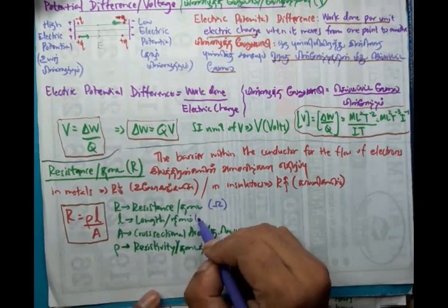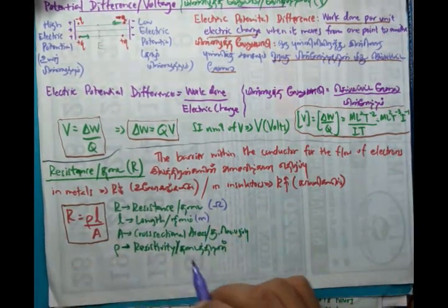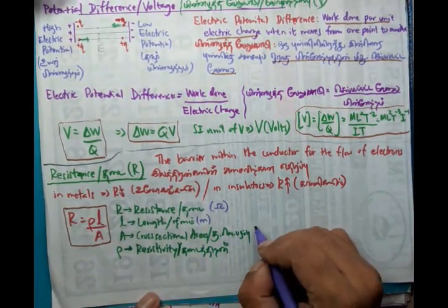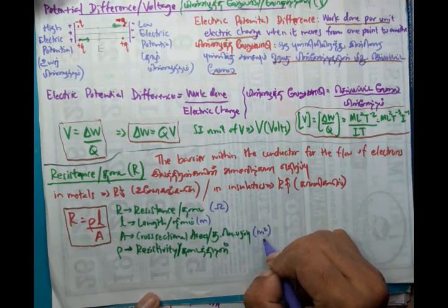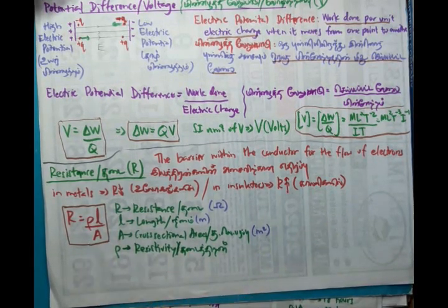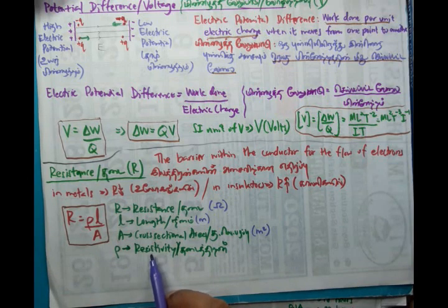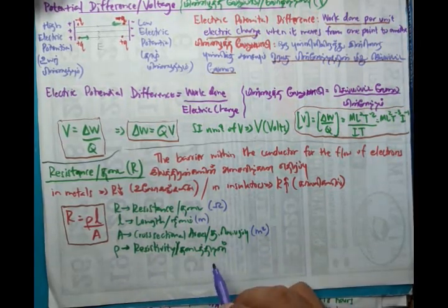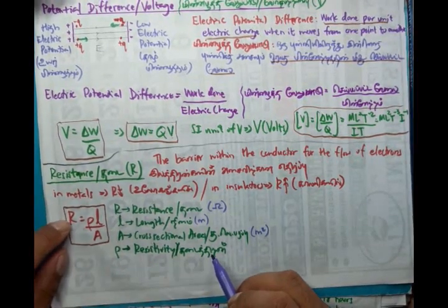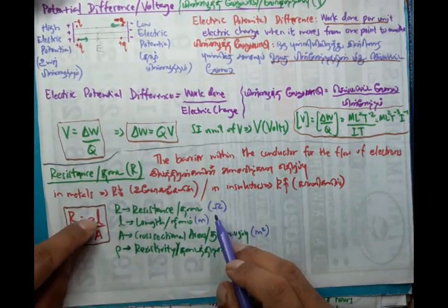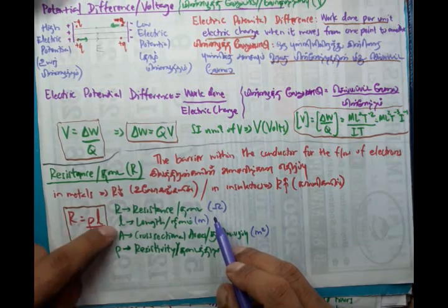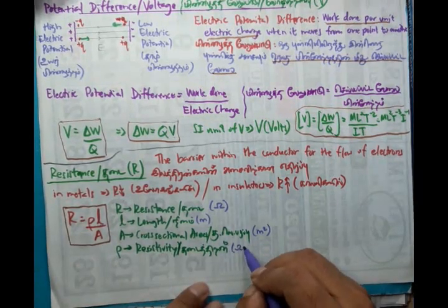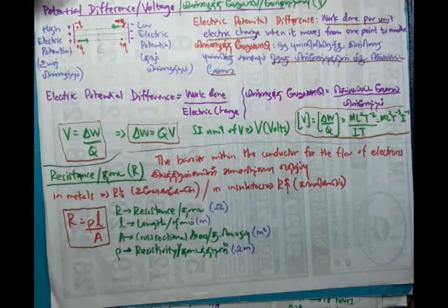This is the equation R equal to rho L over A. R is the resistance, we use the SI unit ohms for that. And L is the length, so we use meter, L is the length of the conductor. And A is the cross sectional area of the conductor, so it is meter squared. And rho, this is rho, for density we use rho, that rho, it is a new term, that is called resistivity. So what is going to be the unit for resistivity? This is ohms, this is meter, this is meter square, then this goes the other side, it is going to be ohm meters. That is resistivity.